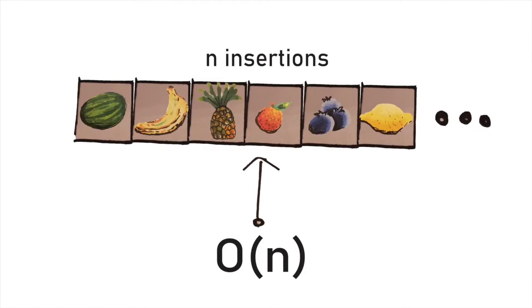Adding amortized means that individual insertions may be more expensive, but a sequence of n insertions is guaranteed to be O(n), making each one O(1).